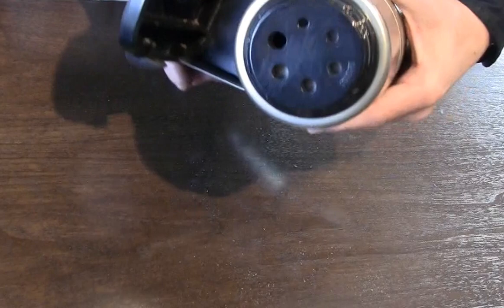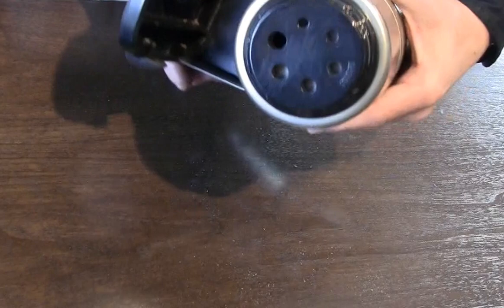First, unplug the sharpener from the wall, turn the sharpener over, and remove the screws in the base that secure the top enclosure.